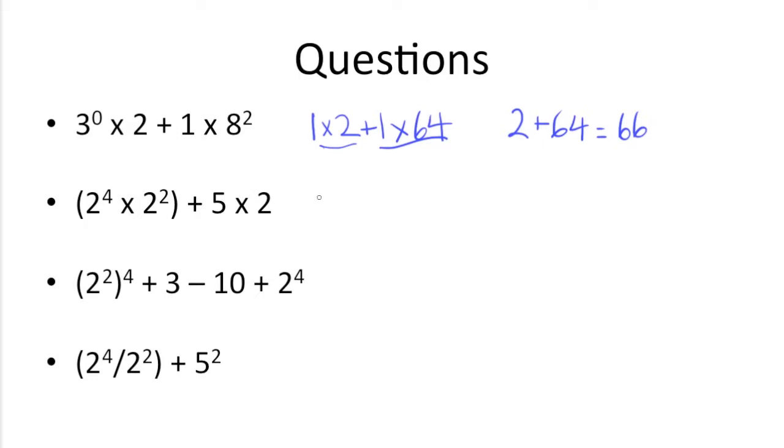So 2 to the 4th power is 2 times 2, which is 4, times 2, which is 8, times 2, which is 16, times 2 squared, 2 times 2, which is 4, plus 5 times 2.